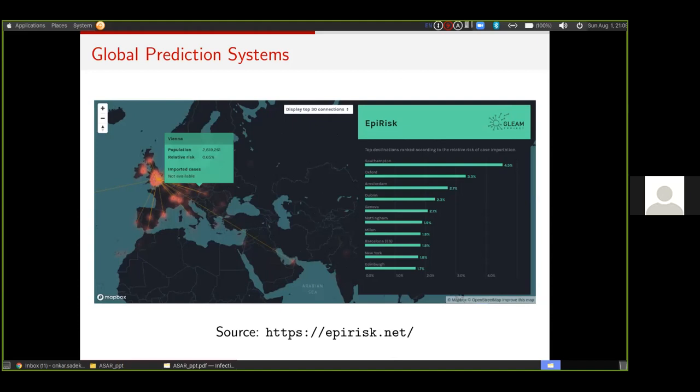Based on transportation and aspects of how the disease can spread, the people who created epiris.net gave a list of the cities which would be at highest risk if London was the outbreak. You can see that Southampton, Oxford, Amsterdam are a few of the big cities in the world which are at highest risk. However, the problem with these global prediction systems is that they are mainly designed by researchers from Europe or the US, and hence they are very specific or focused on places in Europe or US. There's not extensive data available for an India-specific model.